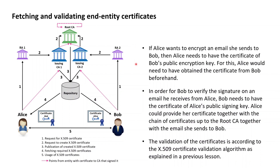Bob as the receiver of the signed-then-encrypted email then first needs to peel off the outer encryption layer by making use of his private decryption key, and to then verify the digital signature based on the public digital signature verification key of Alice. As Bob is in possession of his own private decryption key, the decryption is easy for Bob, but to verify the digital signature, Bob first needs to obtain the signature certificate of Alice, which he may fetch from the public registry of certificates as maintained by the PKI.